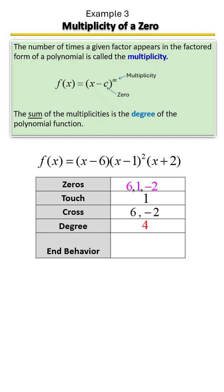So what is the end behavior of this graph? Well, the fact that it is a fourth degree polynomial, that's an even polynomial. Even is always both ends up or both ends down. And because we don't have any negatives out here for our coefficient, it's going to be both ends up.